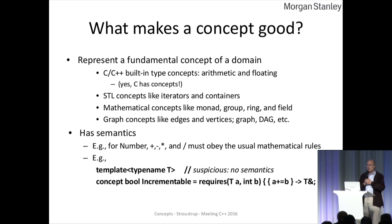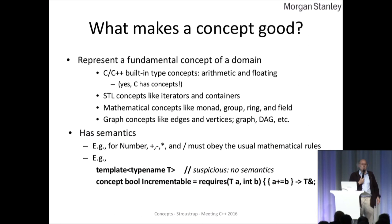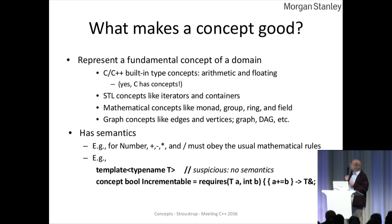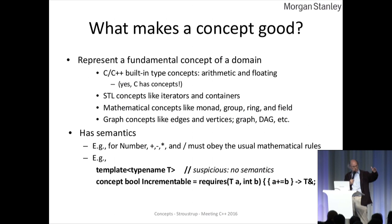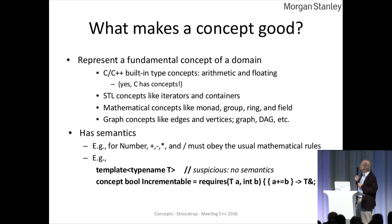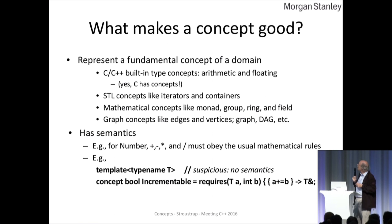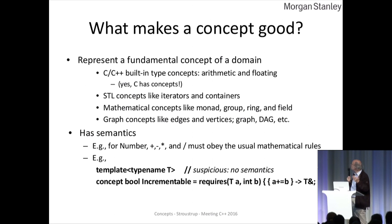So now to the real question: what makes a concept good? We don't just write functions and discuss functions — we discuss what they do and how you design them well. We have the built-in types of concepts: arithmetic types and floating types. We've actually had concepts in C and C++ since about 1974. STL concepts have iterators and containers — you can look them up, they're specified. As I keep pointing out, compilers don't read manuals. And other fields have concepts: monad, group, ring, field, and graphical concepts.